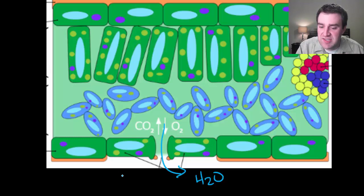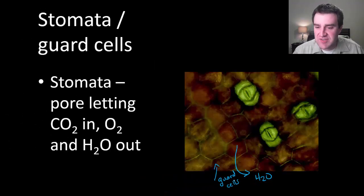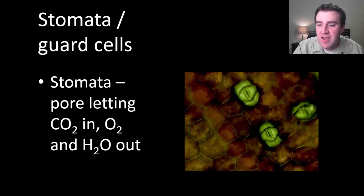Well, the solution is that they also have these guard cells around their stomata pores, and those guard cells can protect against too much water loss. So here's kind of a really neat microscopic view here.